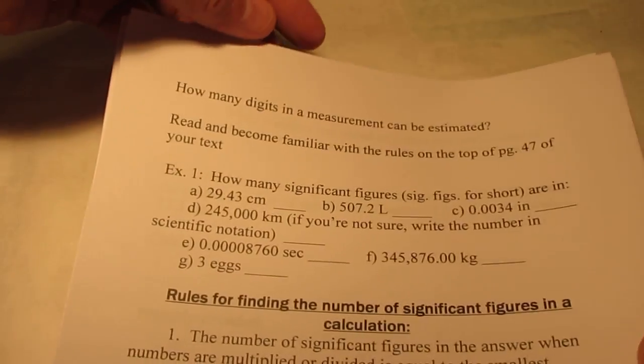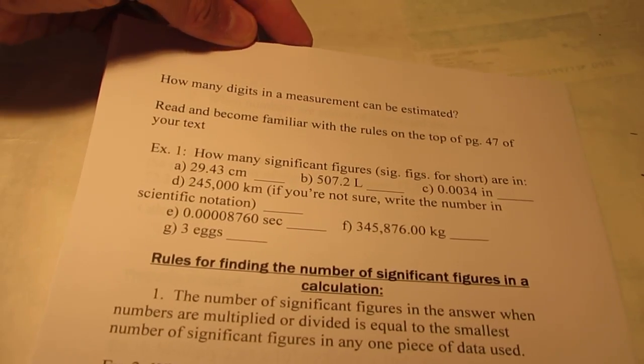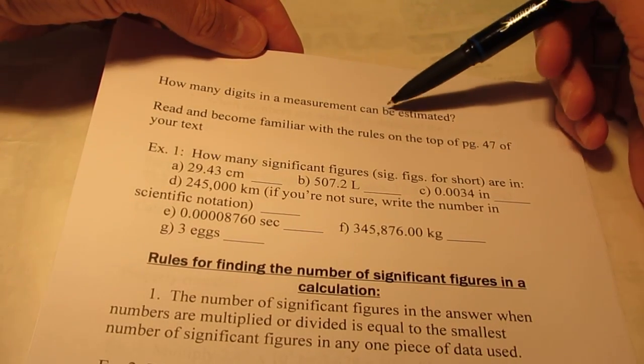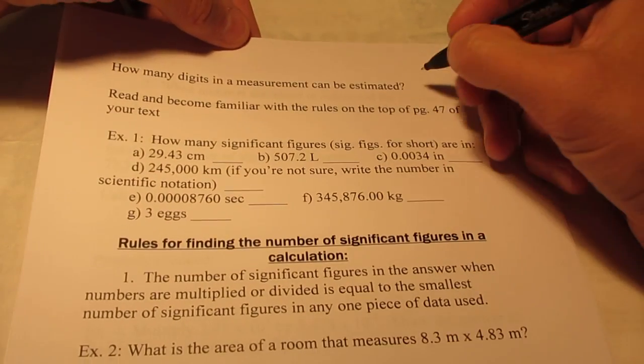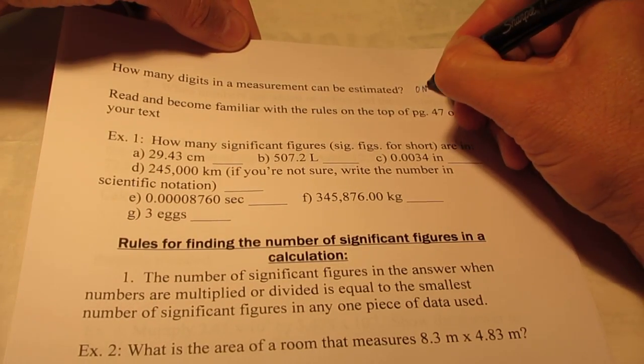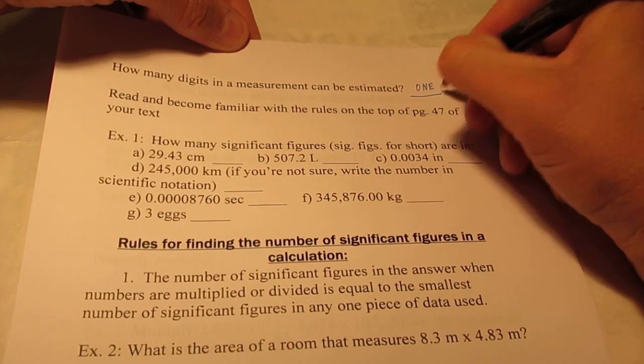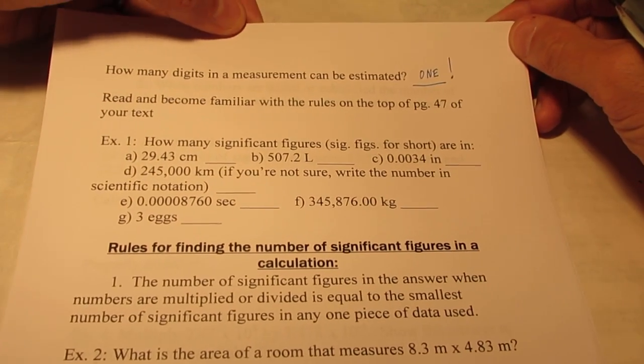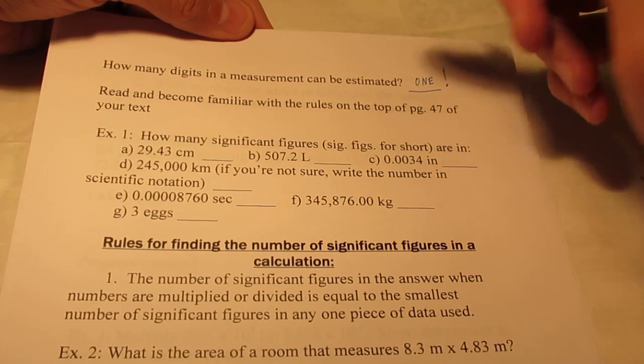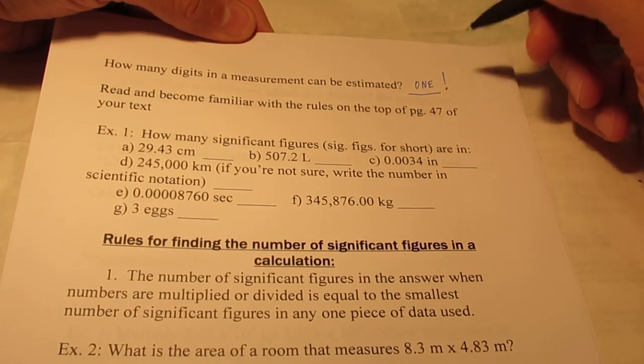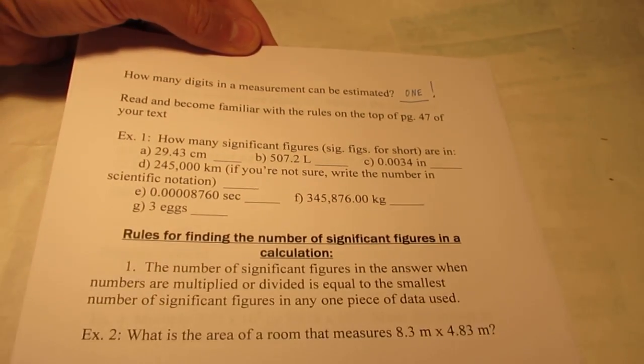Now, I've answered this question a couple of times for you. We'll see if you've been listening. How many digits in a measurement can be estimated? And the answer is only one. We can estimate one. Now, we write down all the numbers we know for sure plus one estimated digit. No more than that.